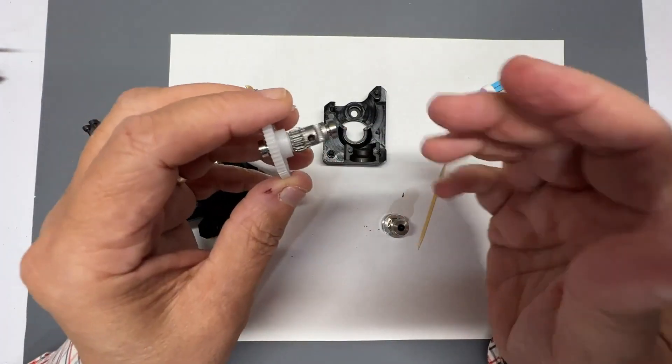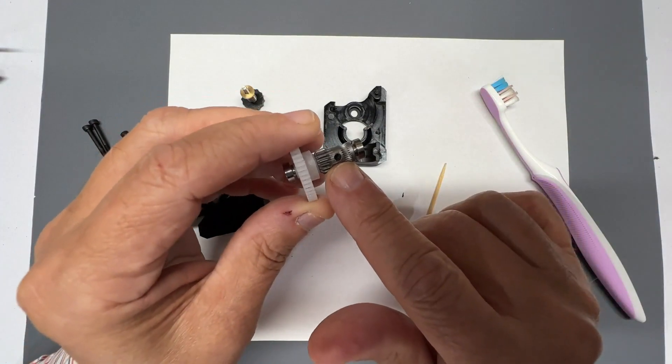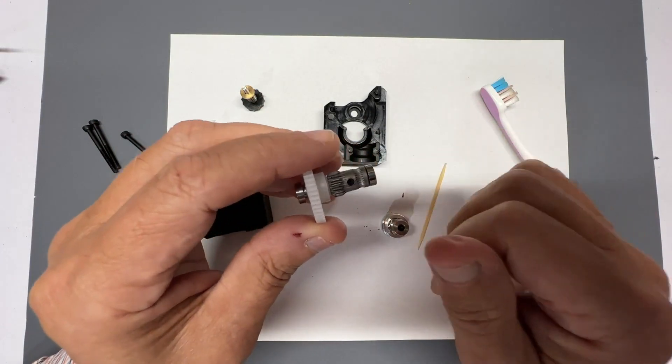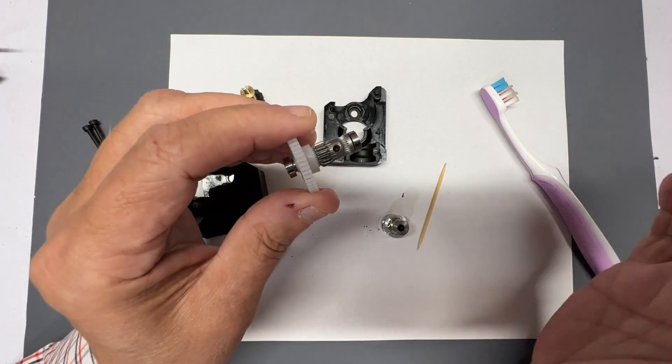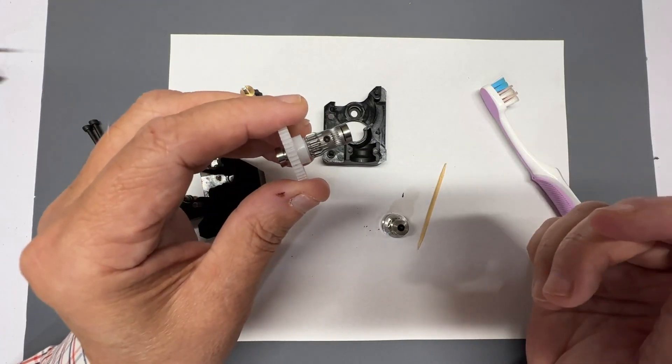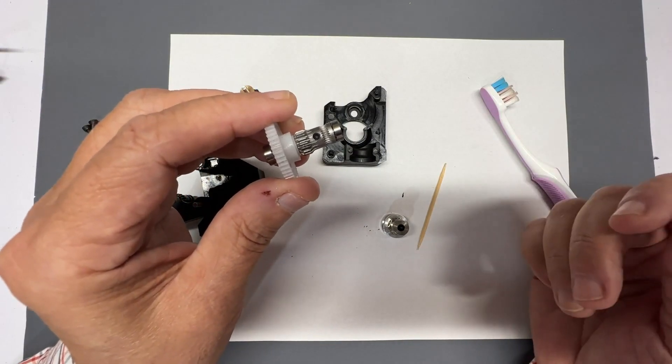Now, while this is out, I want to make sure that little set screw is tight. I check that every time I disassemble this, which is once a week, by the way. I do this procedure once a week just to make sure it's clean. If I weren't doing a video, it would take about five to ten minutes.